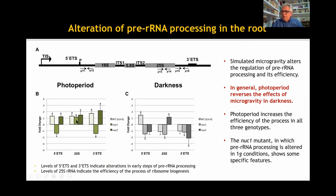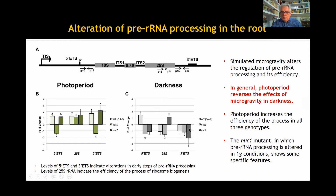When seedlings grew in the RPM with photoperiod regime, the 25S rRNA showed greater accumulation for all genotypes — wild type, NUC1 and NUC2. However, sequences of both ends of the primary transcript only appeared accumulated in wild type and NUC2 mutant, but they appeared reduced in the NUC1 mutant. Comparisons were done in all cases with respect to the 1G control. In seedlings subjected to microgravity without light, the ETS pre-rRNA accumulation was different for the two ends: for the 5' ETS it was higher in wild type but lower in the NUC1 mutant, whereas the 3' ETS showed a lower level in both mutant lines, NUC1 and NUC2.